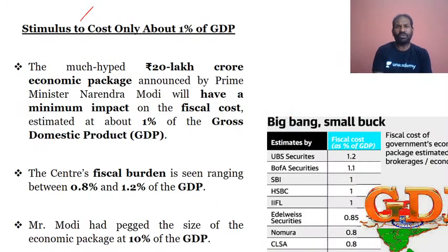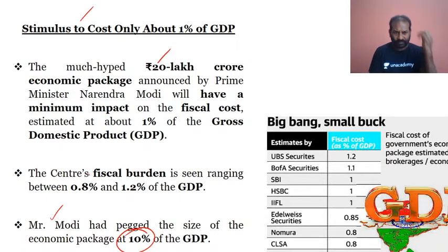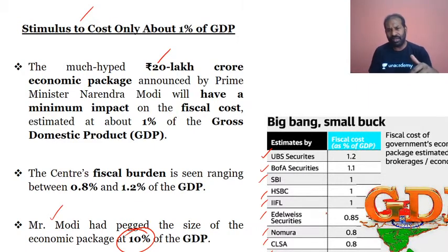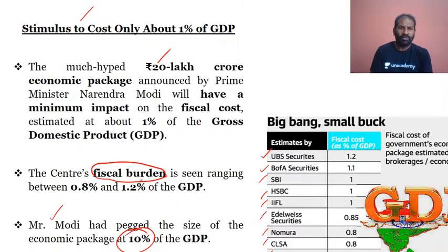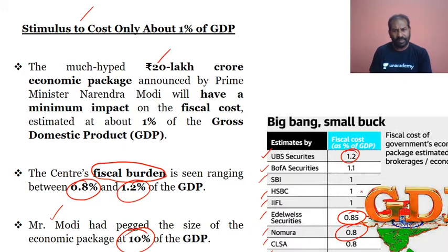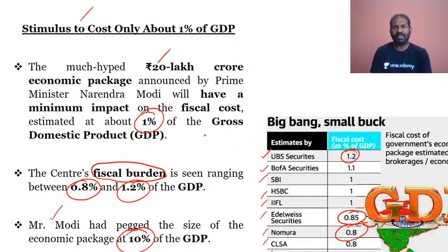There is also news on the economic stimulus: the fiscal cost is estimated to be only about 1% of GDP. Prime Minister Modi announced a ₹20 lakh crore economic stimulus package close to 10% of GDP. However, estimates by UBS Securities, BOFA Securities, SBI, HSBC, IIFL, Edelweiss Securities, Nomura, CLSA, and Citi suggest the actual fiscal burden on the centre would be just 0.8% to 1.2% — close to about 1% of gross GDP.